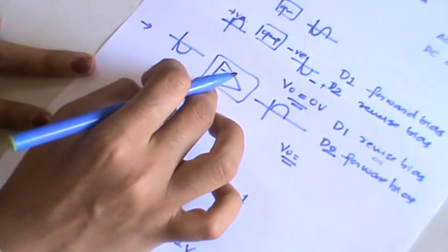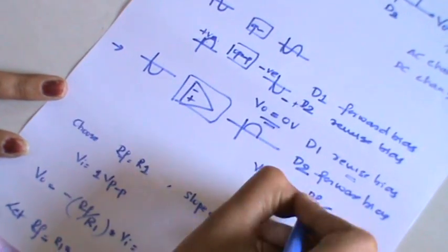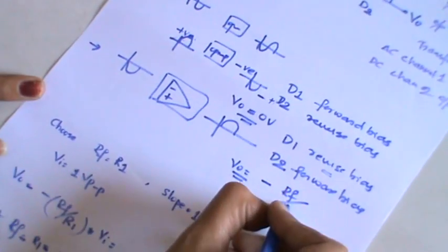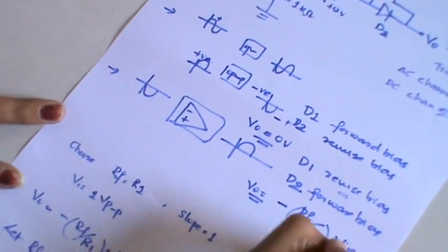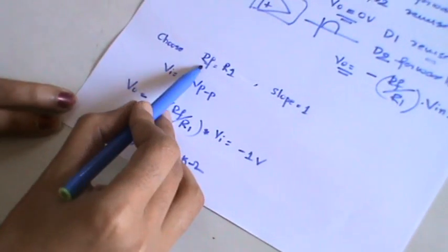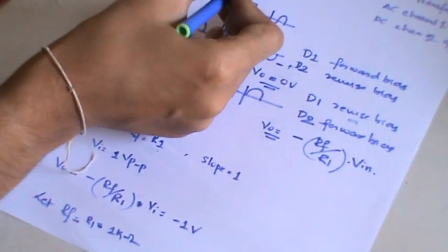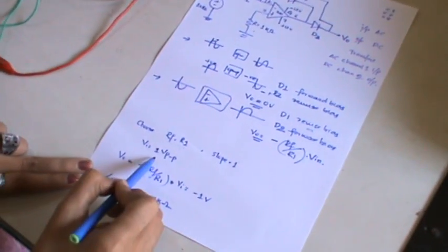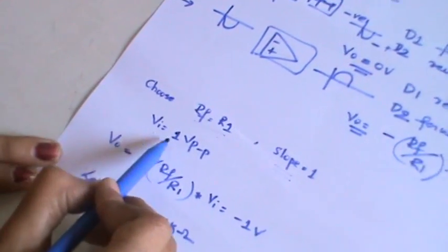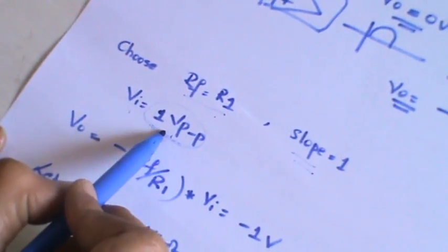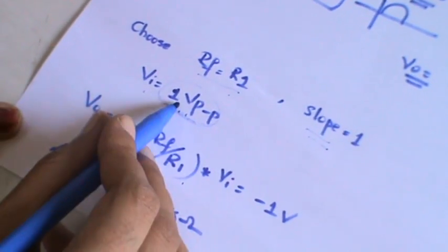How do you calculate it? You use the formula, you have a feedback resistor RF and R1 value, minus RF by R1 into the input voltage VA. In the design, I will choose RF as well as R1 equal to 1. RF is the feedback, R1 is the input resistor. Both will be equal to 1 which will indicate that slope is 1. VI you can consider either 1 volt peak to peak or 0.3 volt peak to peak.